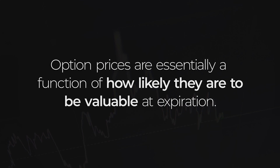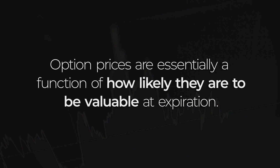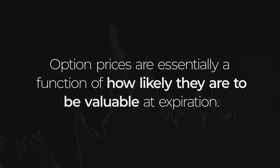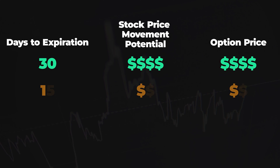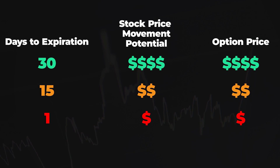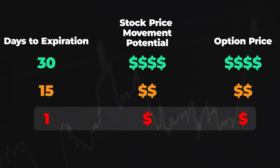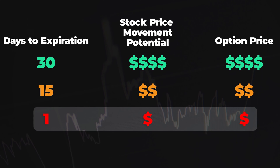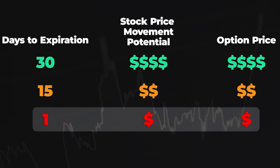Theta gauges the estimated daily depreciation of an option's price if the stock price and expected volatility remain unchanged. Option prices are essentially a function of how likely they are to be valuable at expiration. Generally speaking, option prices will fall as they get closer to expiration because with less time before expiration, there is a smaller probability of seeing big stock price movements, and therefore a smaller probability of big option price movements.